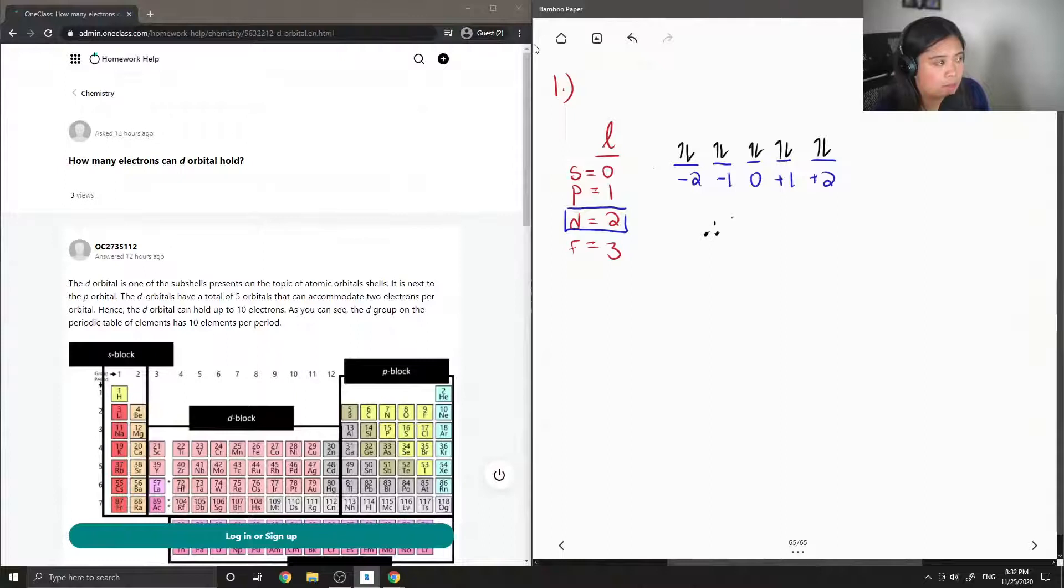So therefore, the d orbital can hold 10 electrons.